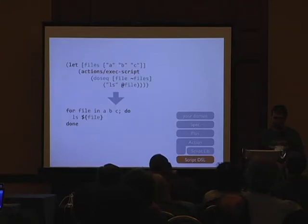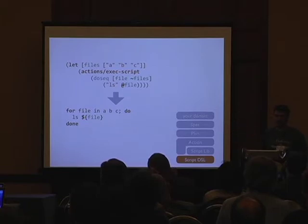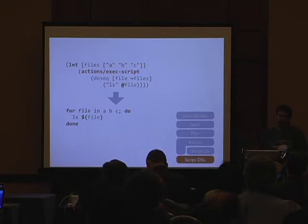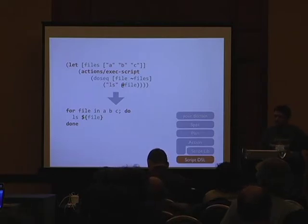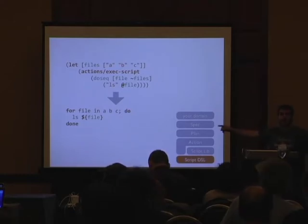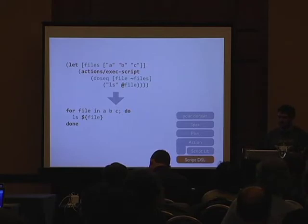Here is a more interesting example where we intertwine Stevedore code — everything inside exec-script is Stevedore — with Clojure code on the outside. On the outside we declare files as a set of file names, and inside we use unquote to refer to Clojure code. The unquote can call functions; you can put any Clojure code inside the script. The result of compiling this is a shell script that will be run on the node itself. All of Pallet is built on these script abstractions.